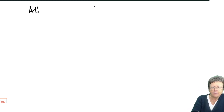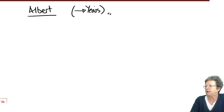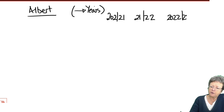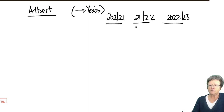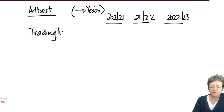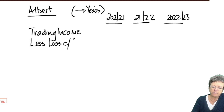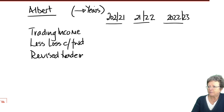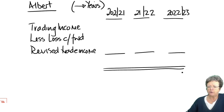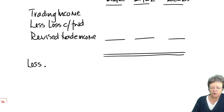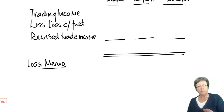So we're looking at tax years 2020-21, 2021-22, and 2022-23 across the top. His trading income — always set your pro forma out first — then less: loss carried forward, and then revised trade income. I'm also going to set up what's known as a loss memorandum, or loss memo — there are marks for this, so make sure you always include it as part of the workings.